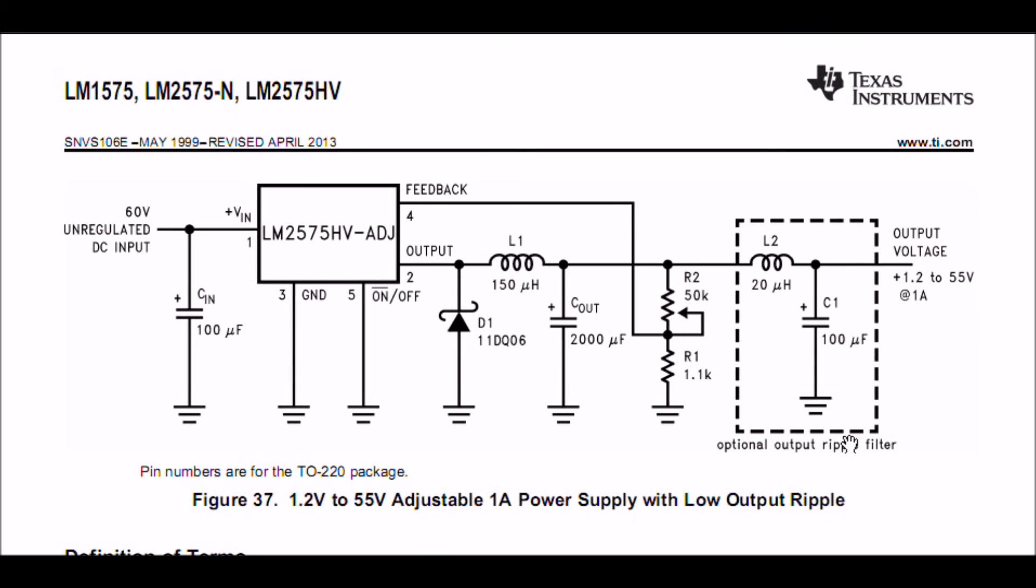Here's the schematic right out of the Texas Instruments spec sheet. Mine is a little different. You can put in up to 60 volts. I used a 470 microfarad input cap for a little more stability. I used a 160 microhenry coil. I changed R2 to 10k.